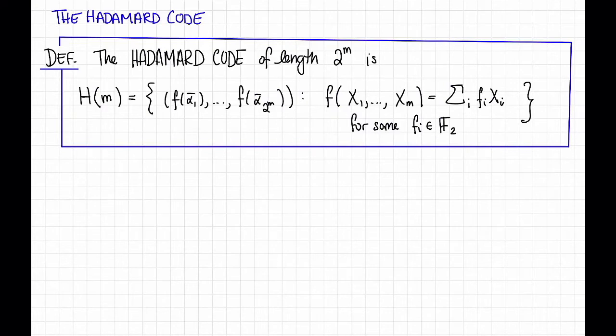So here's the definition of the Hadamard code. The Hadamard code of dimension m and length 2 to the m is defined as follows.